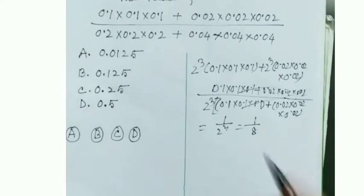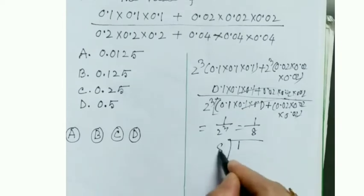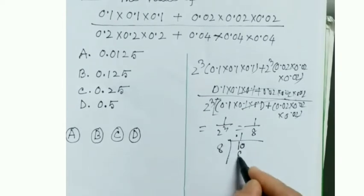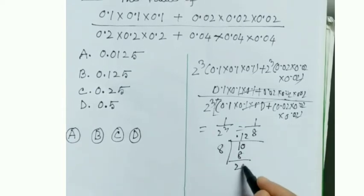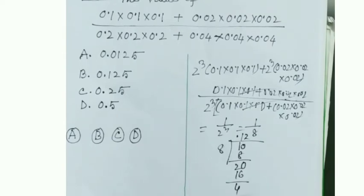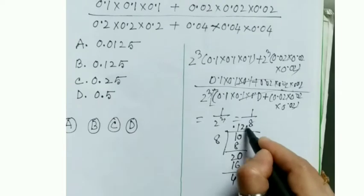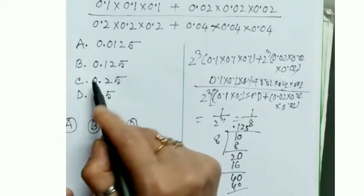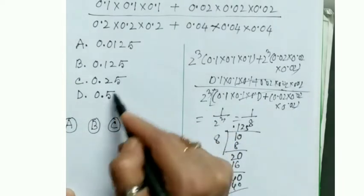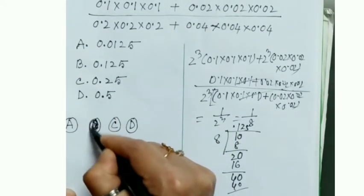Now we need to convert 1/8 into a decimal. Dividing: 8 into 1.0 — 8 ones are 8, remainder 2; bring down zero: 8 twos are 16, remainder 4; bring down zero: 8 fives are 40. So our answer is 0.125. That means B is the correct answer, so we bubble option B.